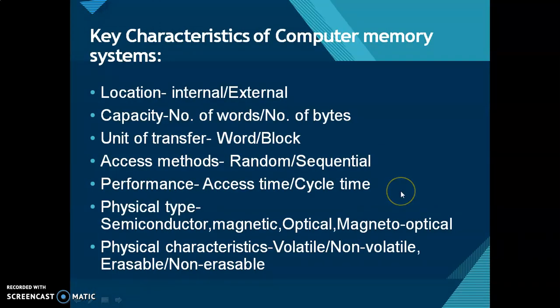The key characteristics of computer memory systems are as follows. The first one is location — memory can be located internally or externally. Internal memories include processor registers, cache memories, and main memories. Externally located memories include optical discs, magnetic disks, magnetic tapes, etc.